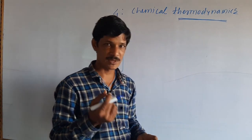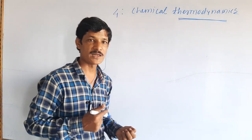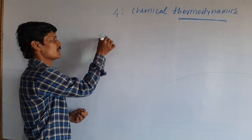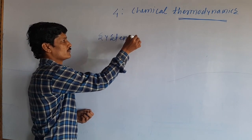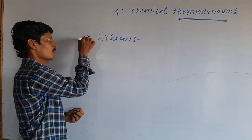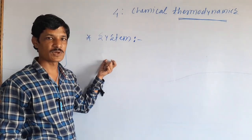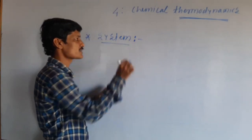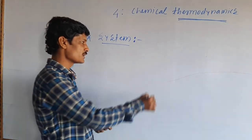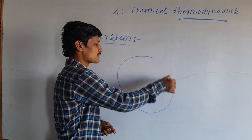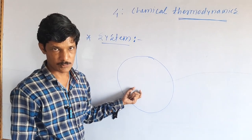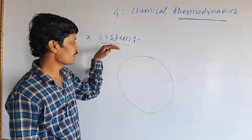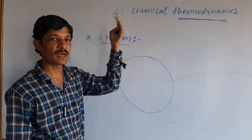When we study thermodynamics, we have some basic concepts to understand. We apply thermodynamics to the whole universe. Imagine that a circle represents the universe. In thermodynamics, we divide the universe into two portions: the system and the surroundings.